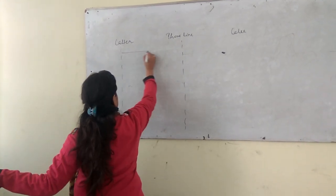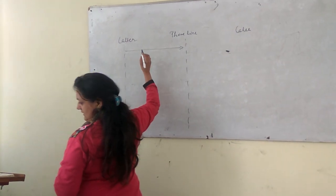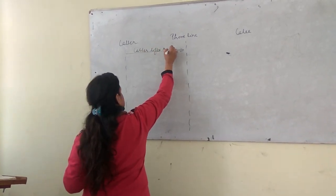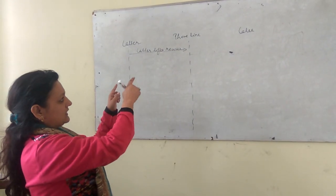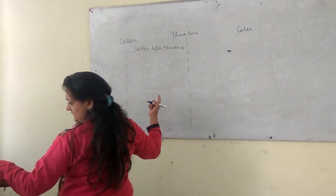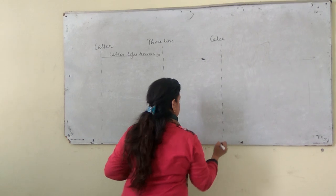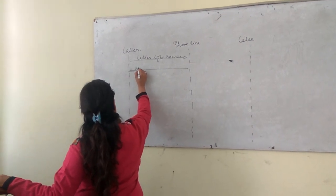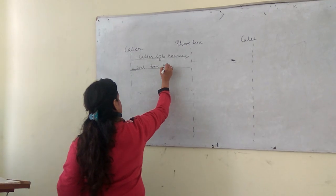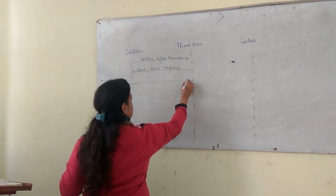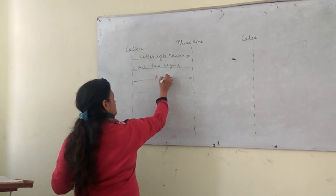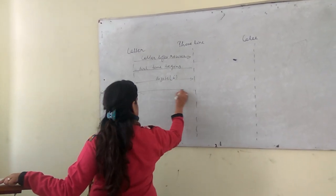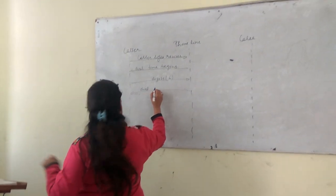What are the transactions? Suppose the caller calls — the caller lifts the receiver. That means the caller is calling through the phone line to that person. Next, dial tone begins. Then you have the dial numbers — digits. Suppose we have 6 digits. Then dial tone ends.